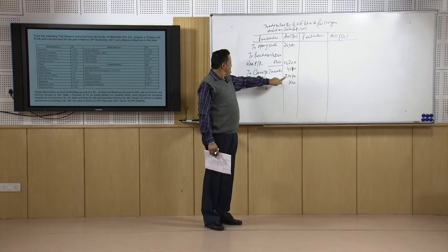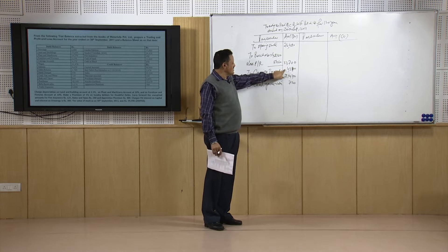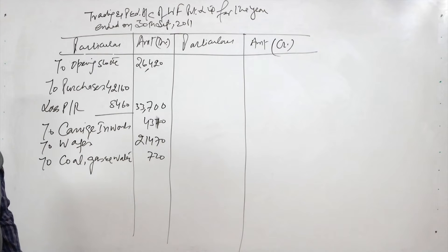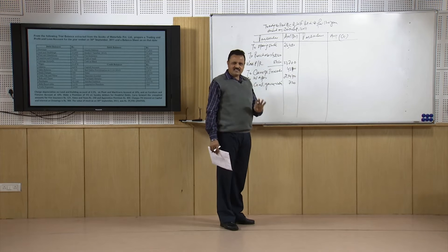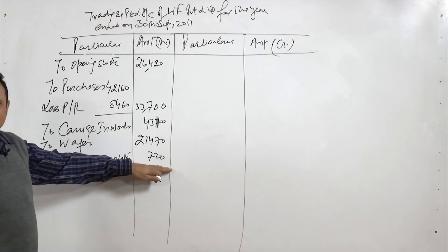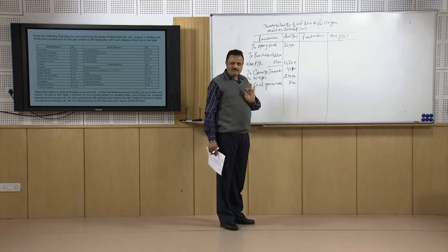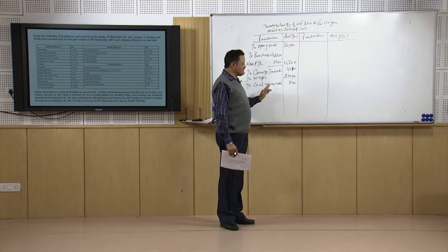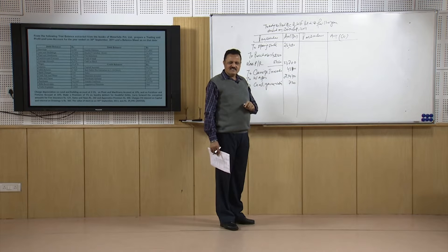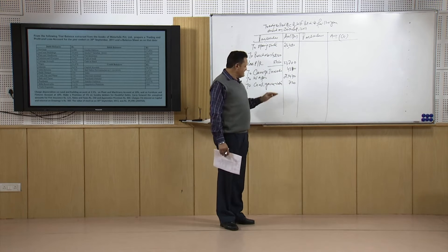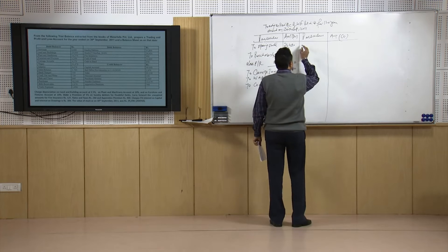Opening stock plus net purchases plus carriage inwards make up the material cost. Wages paid to labour is the labour cost. Coal, gas, and water is the third head — other direct expenses. Any other expenses without which production is possible, but taking the production to market is not, are indirect expenses and will be part of the profit and loss account below.